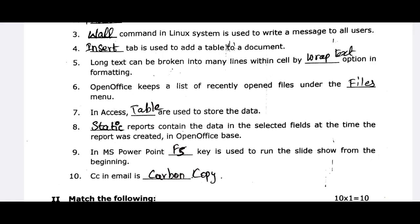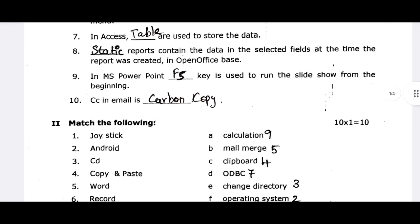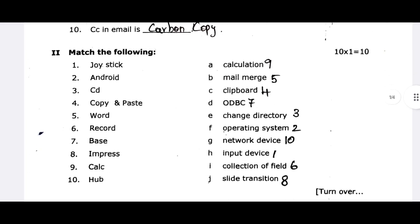CC means carbon copy. The match section is easy. The joystick is an input device. Android is an operating system. CD is the change directory command in Linux. Copy and paste uses the clipboard. In Word, the feature is mail merge. A record is a collection of fields.